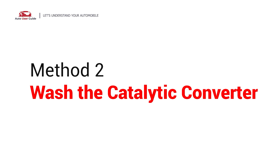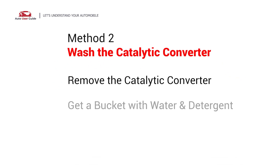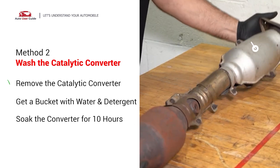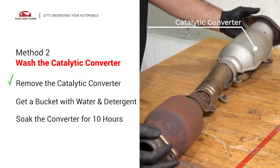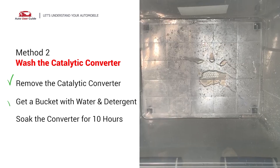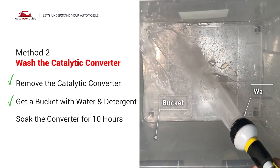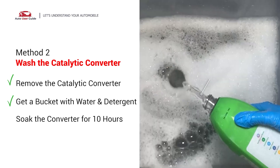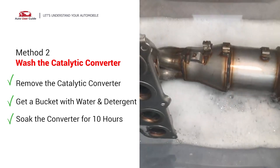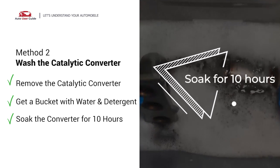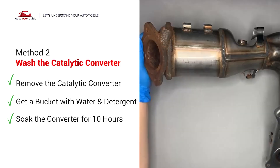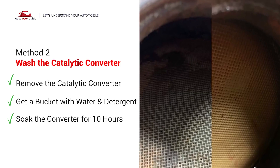Method 2: Wash the catalytic converter. First, remove the catalytic converter from your vehicle. Then take a bucket and put some water and detergent in it. Submerge the catalytic converter in the solution and soak it for 10 to 12 hours to remove all the buildup inside it. Now you can see it looks clear and clean.